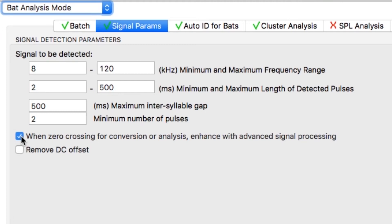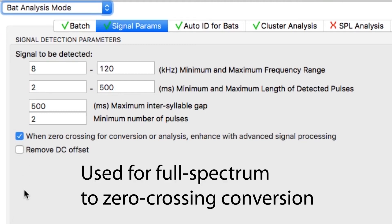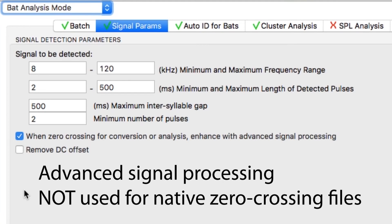The advanced signal processing is used specifically when full spectrum files are converted into zero crossing format. If Kaleidoscope opens a native zero crossing file, this signal processing does not apply.